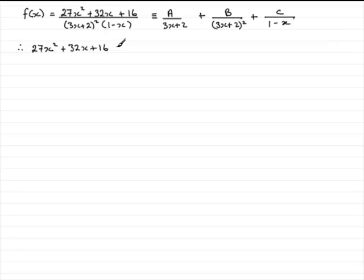And this is going to be identical to a times, now if we multiply by 3x plus 2 all squared 1 minus x, then one of the 3x plus 2's is going to cancel out with this repeated factor here and just leave me with a times 3x plus 2 times 1 minus x. And then when I come on to this term, the second term, and multiply this fraction with the denominator here, the 3x plus 2 all squared gets cancelled out with this one, just leaving me with 1 minus x. So that's going to be b times 1 minus x.